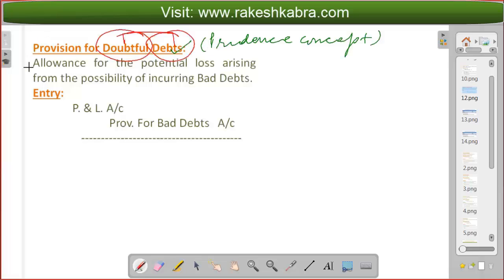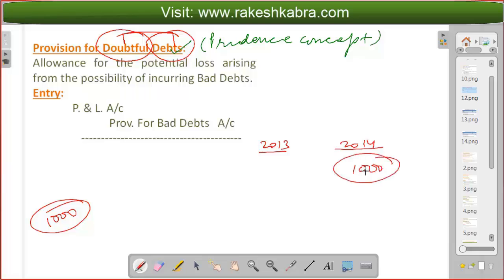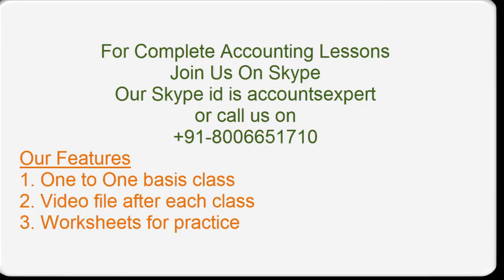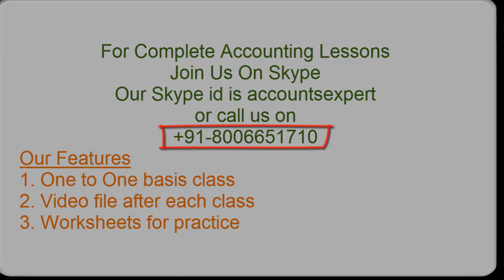We are creating a provision for doubtful debts to follow the prudency concept. In our example, we estimated that $1,000 will turn into bad debts in the next year 2014. This is a future loss. So in the current year 2013, I will set aside some profits — looking forward — to account for this anticipated loss.